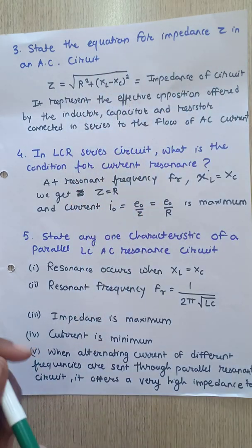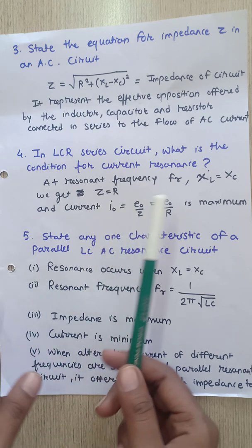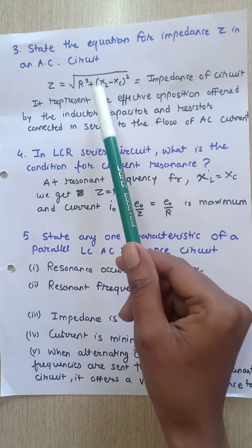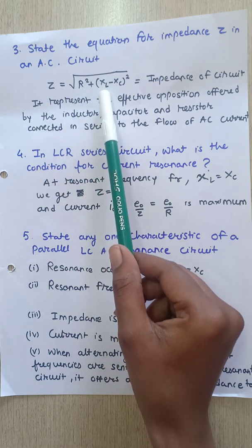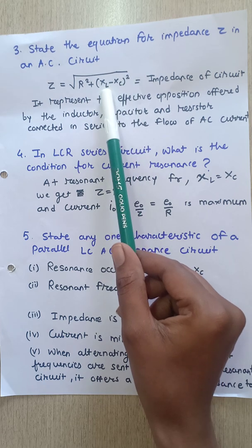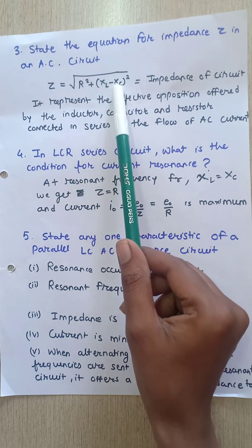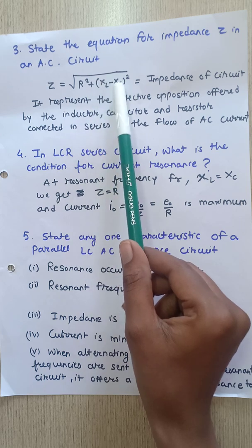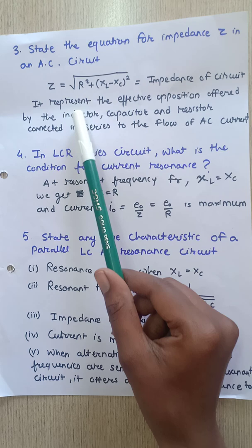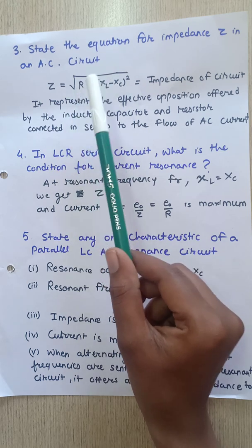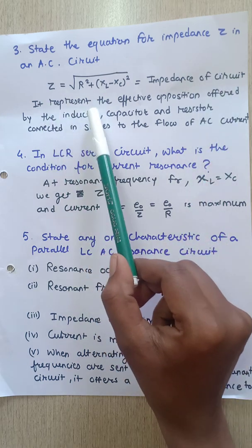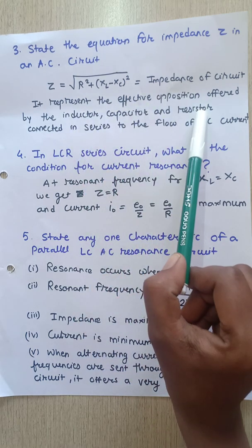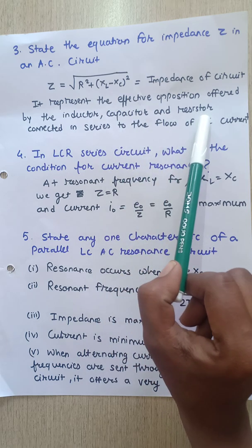The third question: state the equation for impedance in an AC circuit. Z is given by the square root of R² plus (XL − XC)², where XL is inductive reactance and XC is capacitive reactance. Impedance represents the effective opposition offered by the inductor, capacitor, and resistor when connected in series to the flow of AC current.